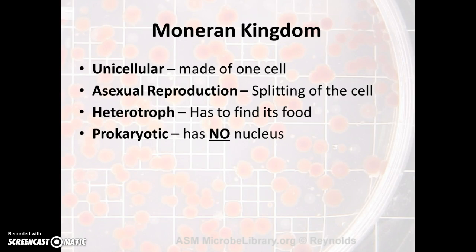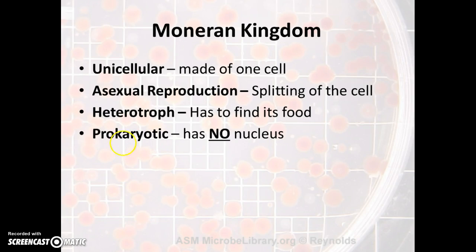The monera kingdom, better known as the bacteria kingdom. To be a monera or bacteria, you must be unicellular — made of one cell — and reproduce asexually, with the cell splitting to form two new cells. The monera kingdom is considered heterotrophs, meaning they have to find their food. When you get strep throat, it's because the monera are feeding off the tissues in your throat, which inflames them. This is the only kingdom that is not eukaryotic — it is prokaryotic, meaning there is no nucleus in a bacterial cell.